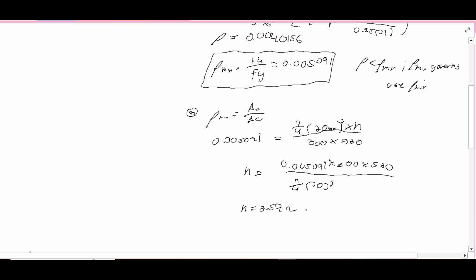Our number of bars should be, by using our calculator, we will have to get the value of 2.57. So meaning, we should round up because there is no 2.5 bar, we should use 3 pieces of 20 mm bar diameters. So this is our final answer.